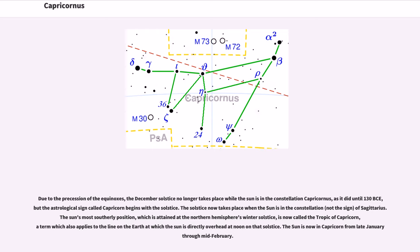Due to the precession of the equinoxes, the December solstice no longer takes place while the sun is in the constellation Capricornus, as it did until 130 BCE, but the astrological sign called Capricorn begins with the solstice. The solstice now takes place when the sun is in the constellation, not the sign, of Sagittarius. The sun's most southerly position, which is attained at the northern hemisphere's winter solstice, is now called the Tropic of Capricorn, a term which also applies to the line on the Earth at which the sun is directly overhead at noon on that solstice.